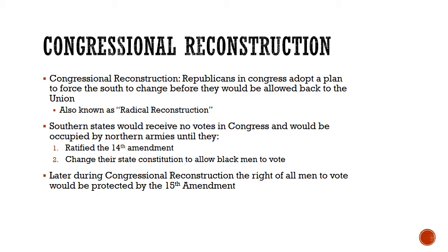Congress came up with a much harsher plan for Reconstruction than the one insisted on by Andrew Johnson. They basically decided to force the South to change before it would be allowed back in the Union — the South would have no political authority until it made these changes. The two big changes required were ratifying the 14th Amendment and changing their state constitutions to allow Black men to vote. Until this happened, the South would be occupied by a Northern Army to enforce justice and keep the peace. Later, Congress would also pass the 15th Amendment.